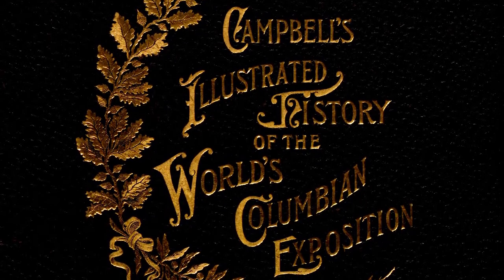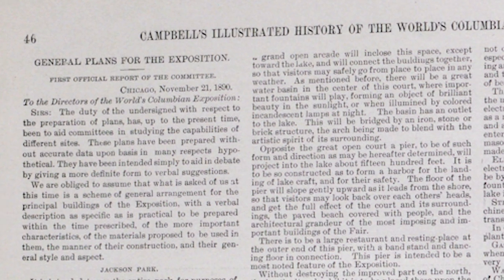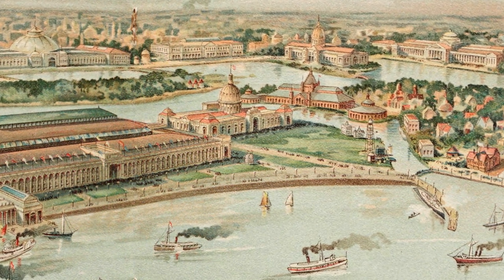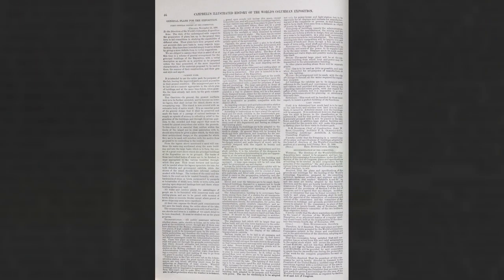There are some indications in this document as to the work being completed in and around the shoreline. This section comes from the general plans for the exposition contained within this publication. I'll begin with this disclaimer presented in the first paragraph: 'These plans have been prepared without accurate data, upon basis in many respects hypothetical. They have been intended simply to aid in debate by giving a more definite form to verbal suggestions.' Essentially, this is the plan, but not really the plan — the written equivalent of brainstorming, or ideation. This is dated November 21st, 1890.